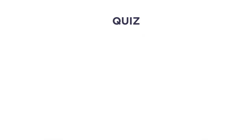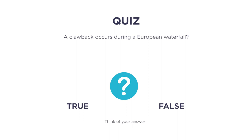So we just told you what a clawback is. Let's test to make sure you're paying attention. A clawback occurs during a European waterfall — true or false? False. A clawback occurs during an American waterfall because that's when a GP collects performance fees on a deal-by-deal basis.